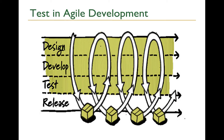Last time, we were talking about the iterative software development approach. The big idea is that we want to break down the big development cycles into smaller cycles. Every cycle, we focus on fewer features, but we still want to do a complete development, including design, coding, and testing. Most importantly, we want to deliver and release the software to the users. The goal is to get more frequent feedback so that we can make sure we're on the right track.